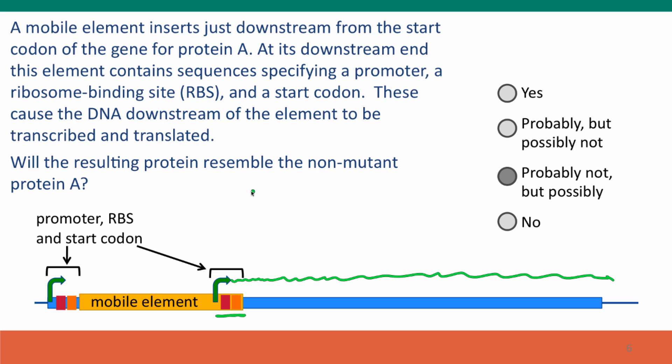Two-thirds of the time, by chance, we're going to have the wrong reading frame. And so we're going to produce a protein that does not resemble protein A. The protein will be translated, but because it's the wrong reading frame, it's likely to hit a stop codon and the protein will be truncated and non-functional because it's making the wrong amino acids.